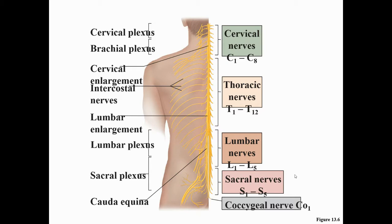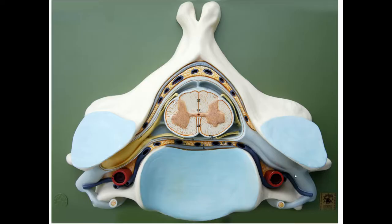We have the cervical region, the thoracic, the lumbar, the sacral, and coccygeal. There are eight nerves in the cervical division, named C1 to C8. There are 12 in the thoracic, T1 to T12. There are five in the lumbar, L1 to L5, and five in the sacral, S1 to S5. Then there's a single pair in the coccygeal region, termed CO1.